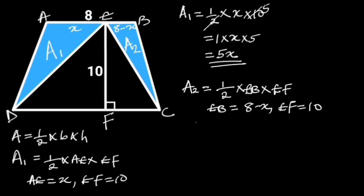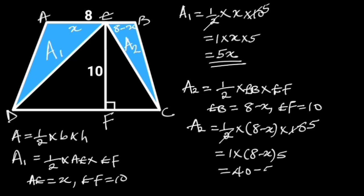If we plug in these values in the formula, we will have 1 over 2 times 8 minus X times 10. 10 divided by 2 is 5, and we are left with 1 times 8 minus X times 5, which is equal to 40 minus 5X square units.